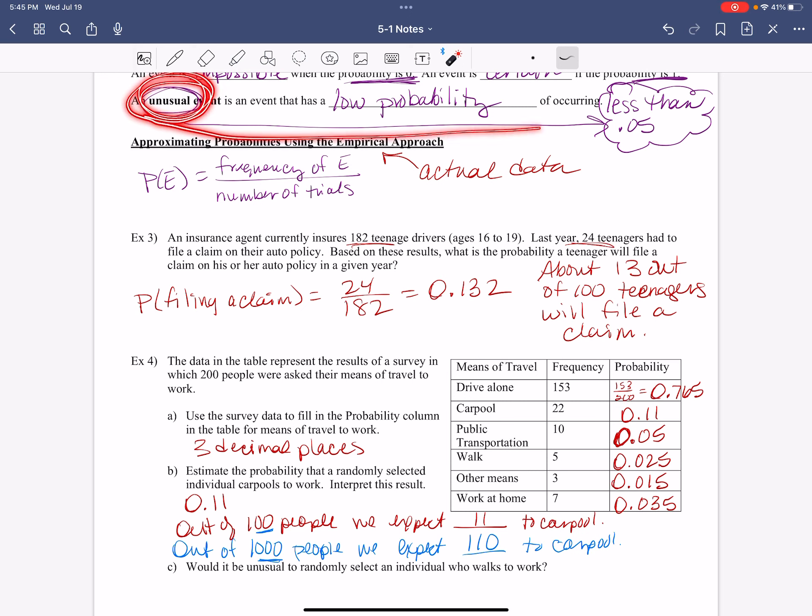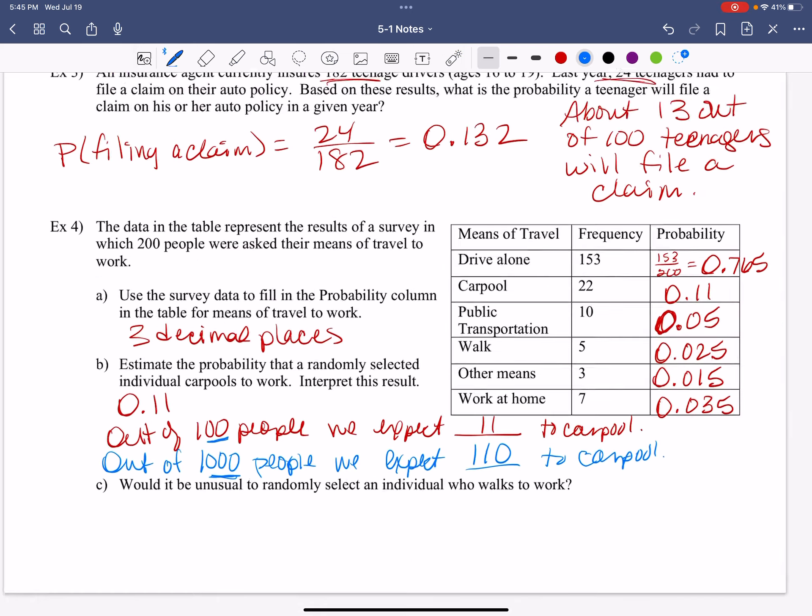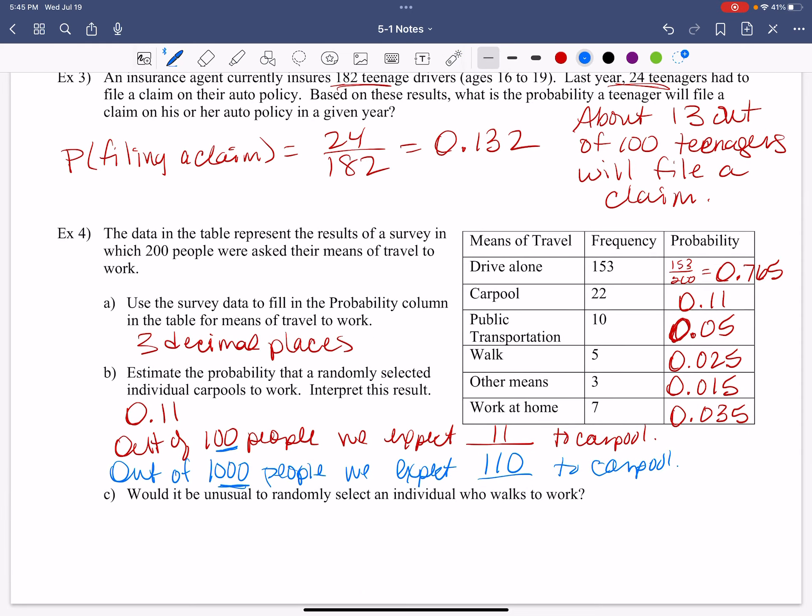It's less than 0.05. So is that less than 0.05 if I'm talking about walking to work? Yes. Yes. Because 0.025 is less than 0.05. So it is unusual. It's unusual. It's unusual.